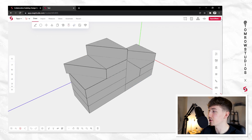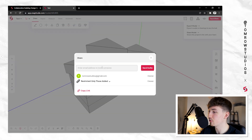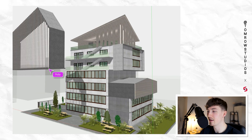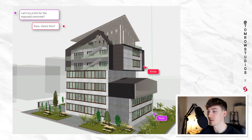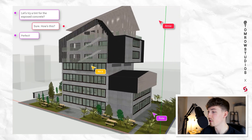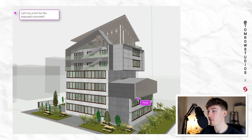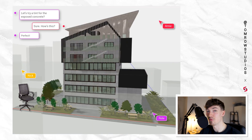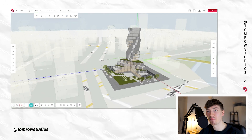The final feature is the collaboration tool. You go to the export/share button, click 'Share Model,' and send an invite to someone with a Snaptrude account. They can join the model, start editing, and make comments. Whether you're working with a fellow student at university, or showing a client who wants to make adjustments, it's really quick and easy to do.